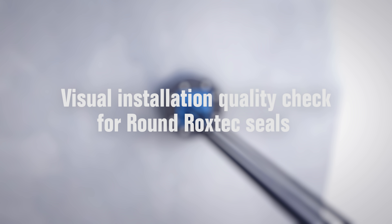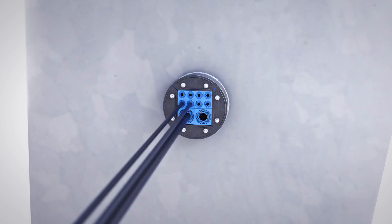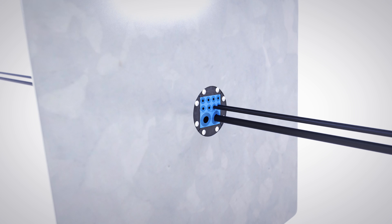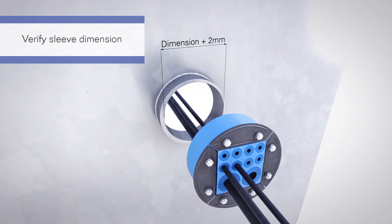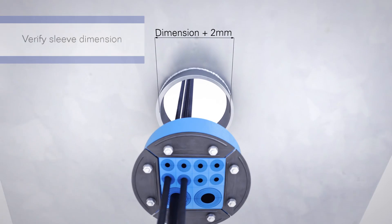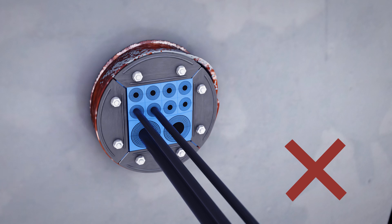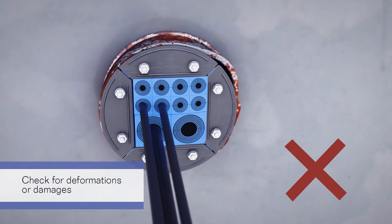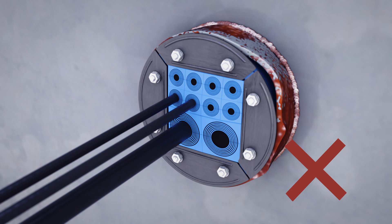This is how you check the installation quality for a round Roxtec seal. If possible, check the transit from both sides. If possible, verify correct sleeve dimension. Maximum internal dimension is sealing size plus 2 millimeters. Check the seal and sleeve for deformation or mechanical damage, such as excessive corrosion or incomplete welding.